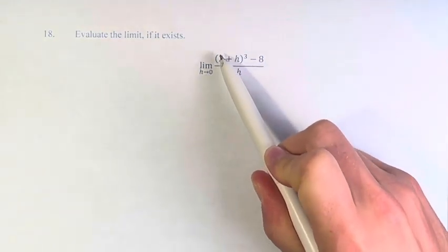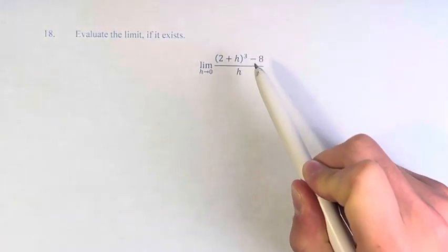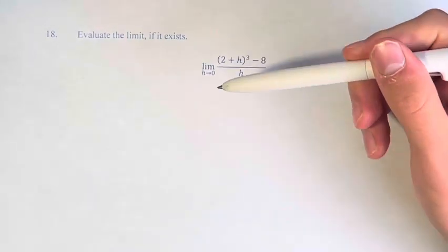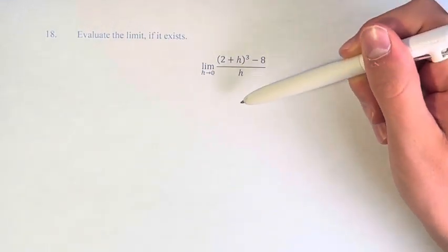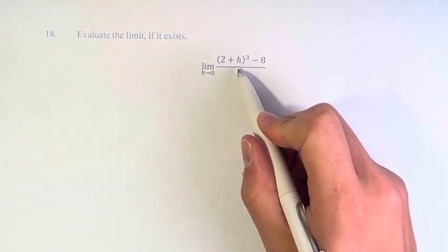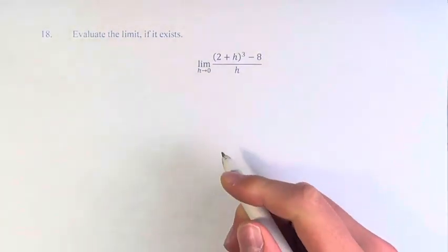We have the limit as h approaches 0 of (2+h)³ - 8 over h. So what we want to do is to be able to plug in 0 for h into this fraction, but since we'd be dividing by 0, first we have to simplify the fraction and then plug it in.